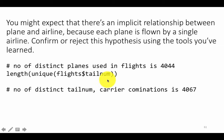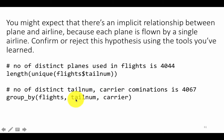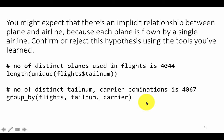Now let's look at the number of unique tail number–carrier combinations. The idea is: if every plane was used by only one airline, then the unique tail number–carrier combinations would also be only 4,044. You can find that by grouping flights by tailnum and carrier. The result turns out to be 4,067 — there are 4,067 different plane–airline combinations — which is kind of a mystery, since there are only 4,044 different planes.